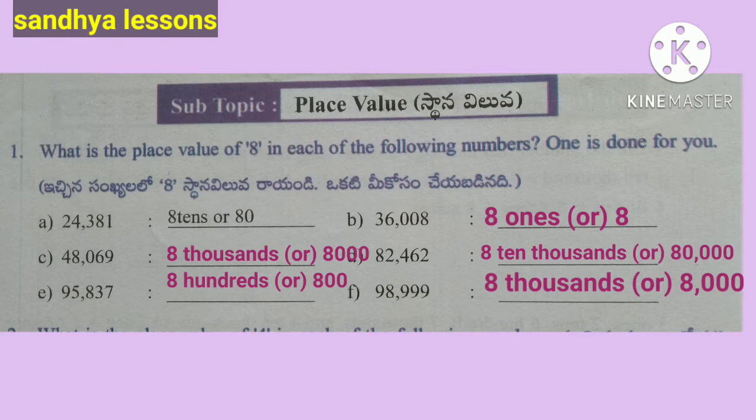Place value of 8 in 82,462: 8 is in the ten-thousands place, so place value is 80,000. Place value of 8 in 95,837: 8 is in the hundreds place, so place value is 800. Place value of 8 in 98,999: 8 is in the thousands place, so place value is 8,000.